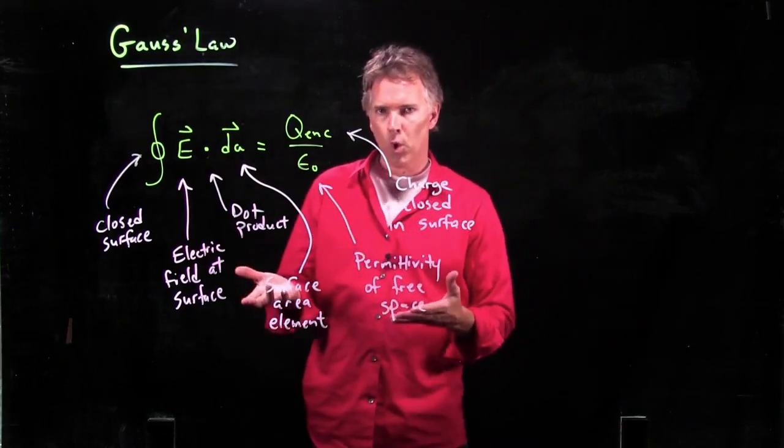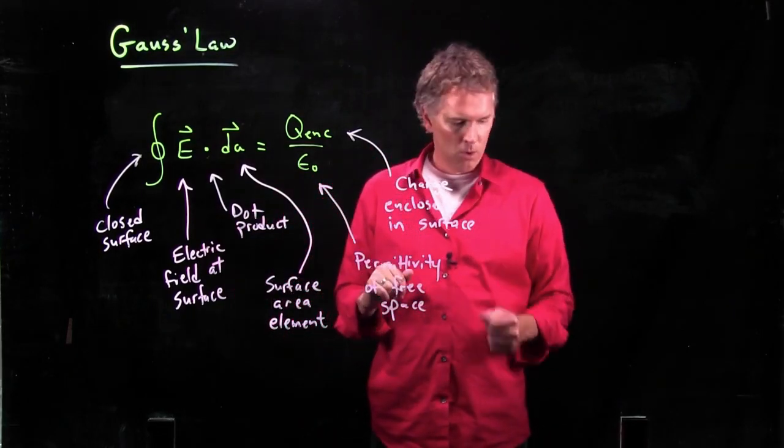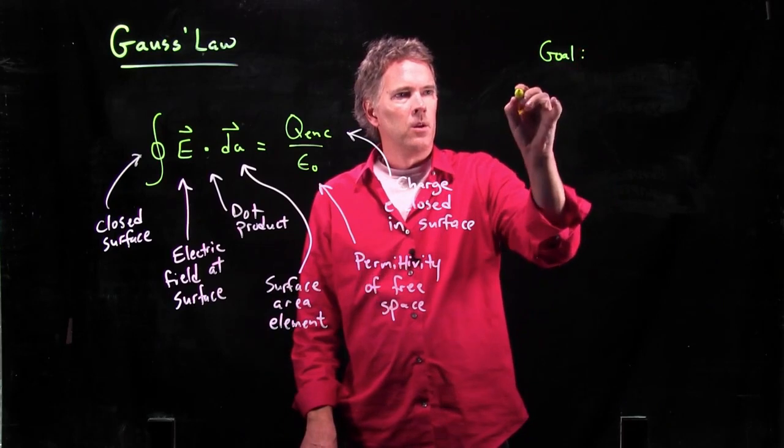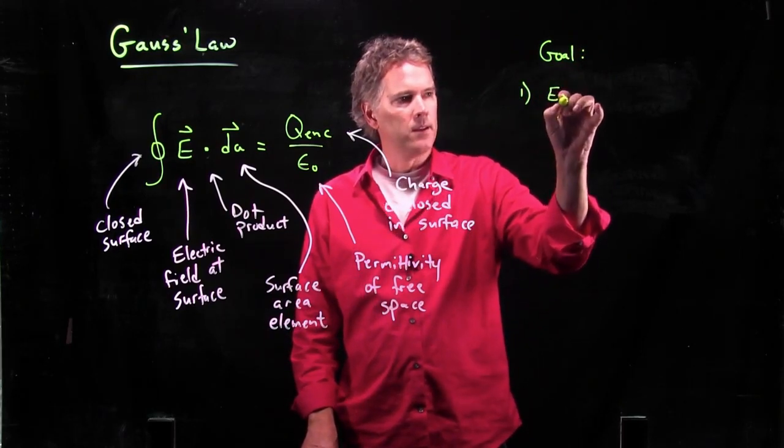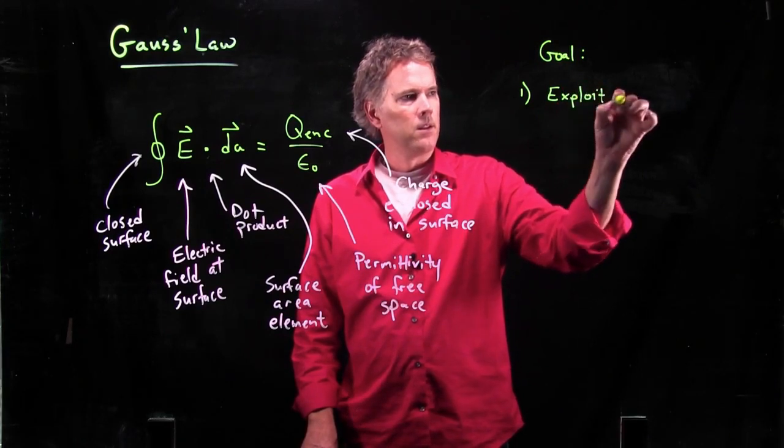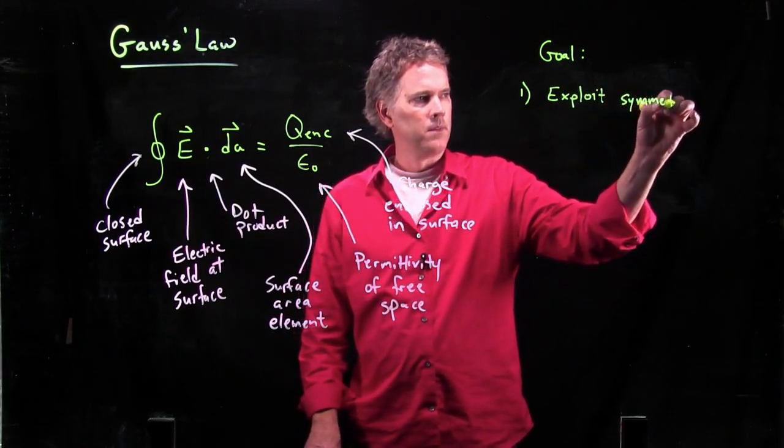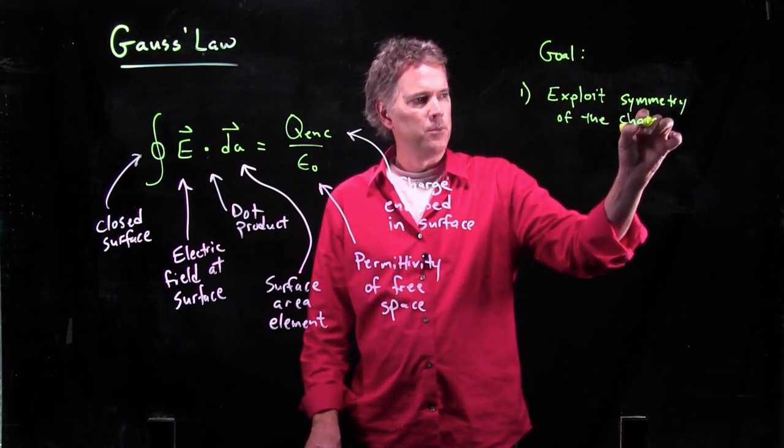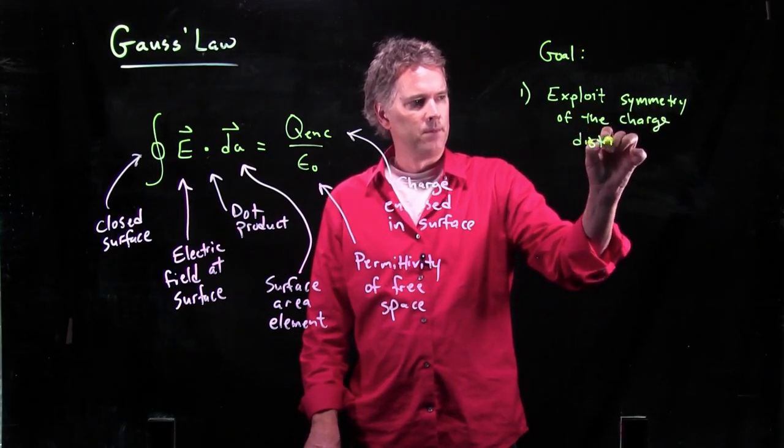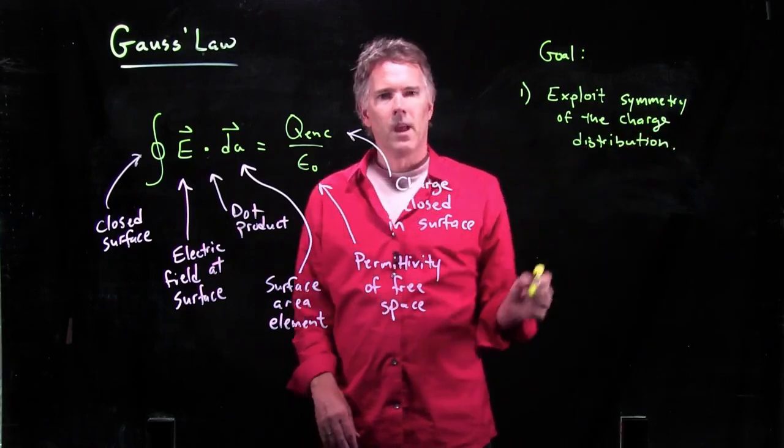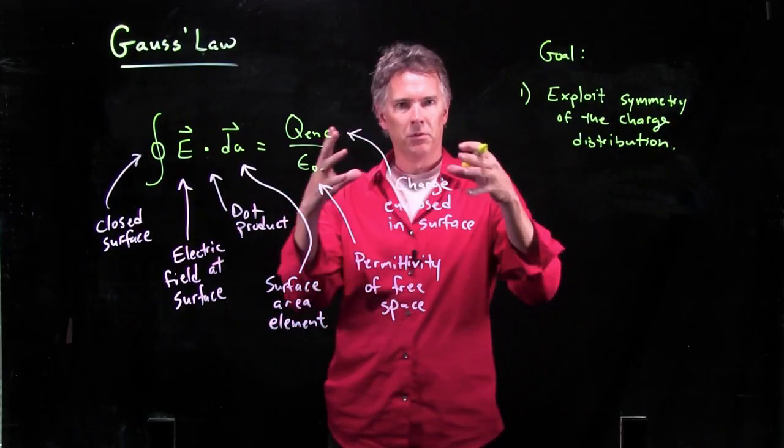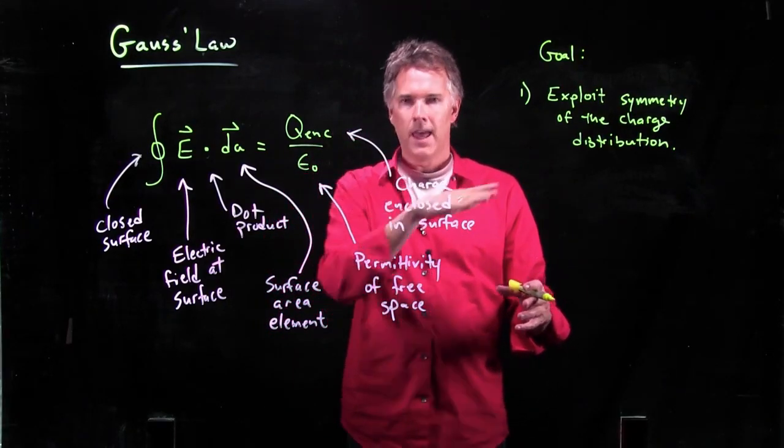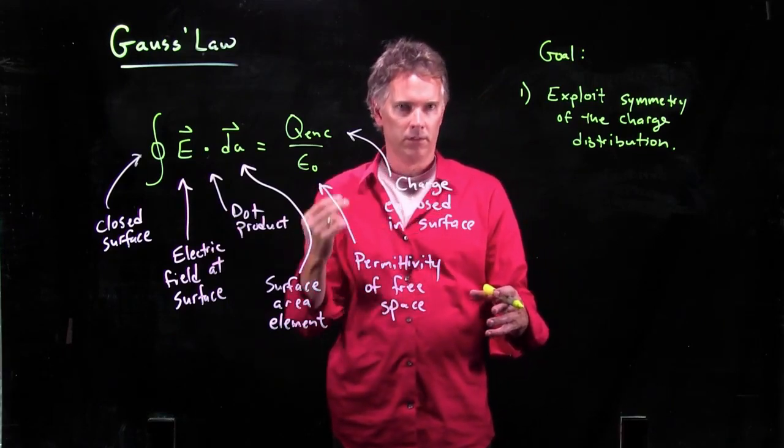What is the goal of applying Gauss's law? The goal is the following. We want to, one, exploit the symmetry of the charge distribution. What that means is, if it's a point charge, we want to use spherical symmetry. If it's a line charge, we want to use cylindrical symmetry. And if it's a planar charge, we want to use Cartesian symmetry.